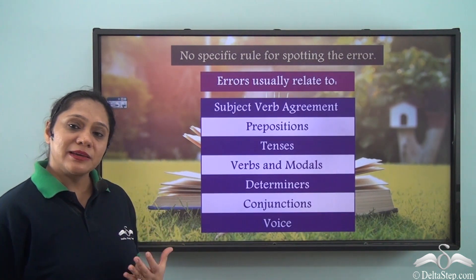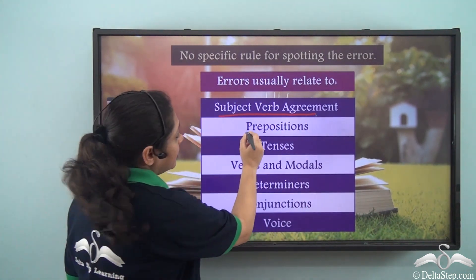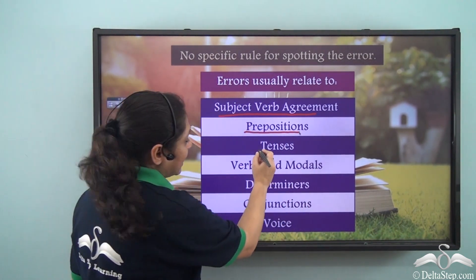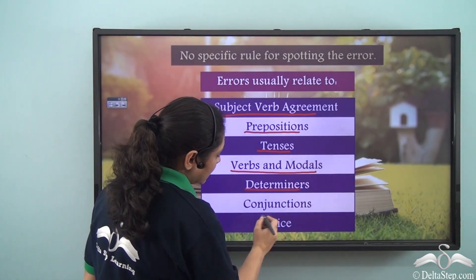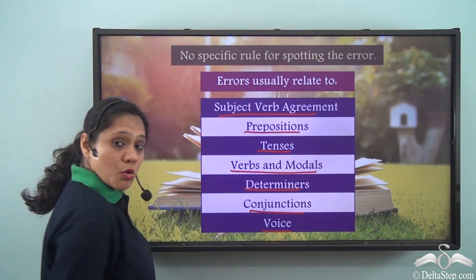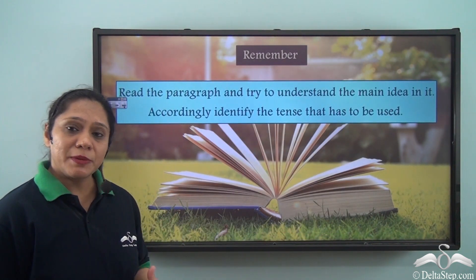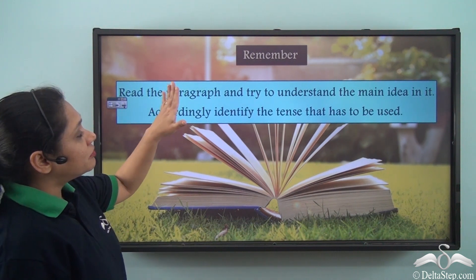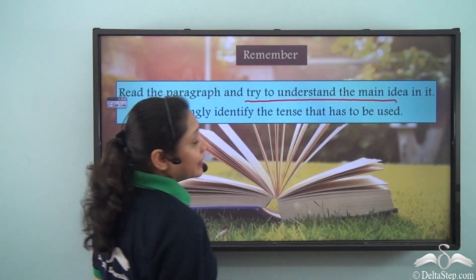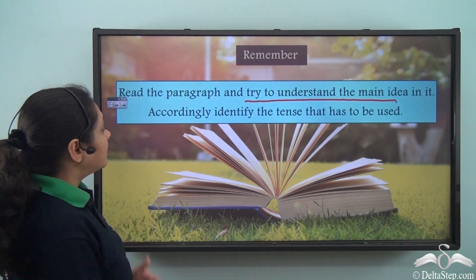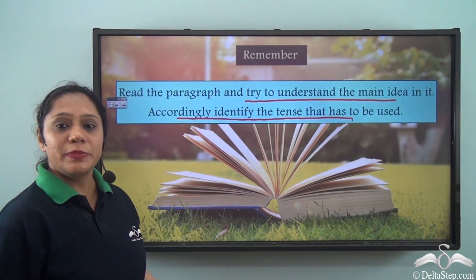The errors that are given usually relate to subject-verb agreement, prepositions, tenses, verbs and modals, determiners, conjunctions, and voice. When you do this, remember that you must read the paragraph and try to understand the main idea first. Then accordingly identify the tense that has to be used.